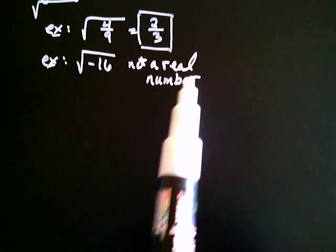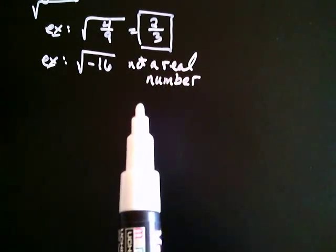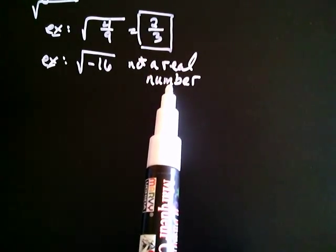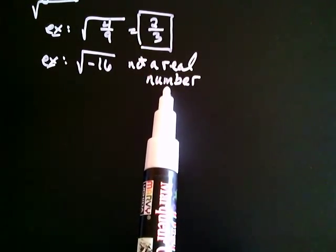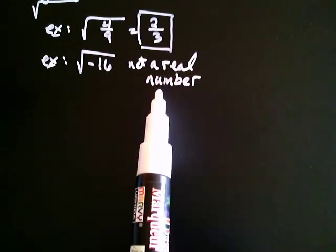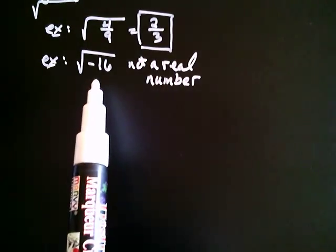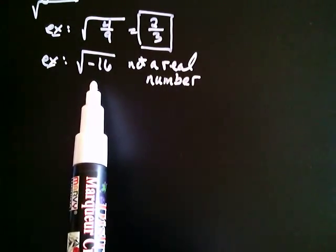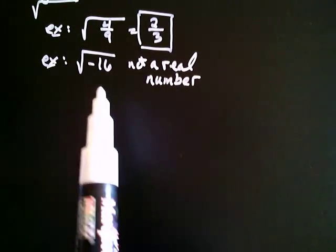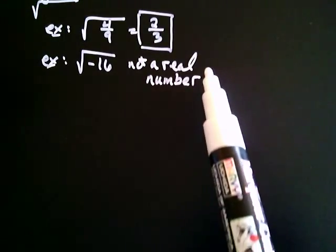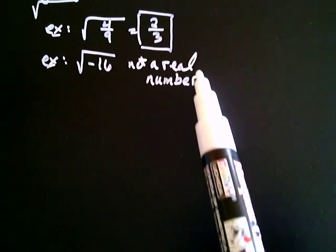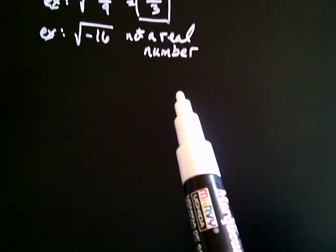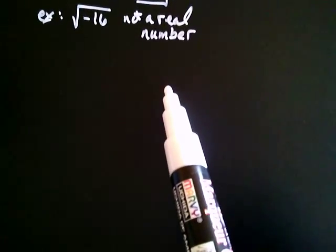Notice I've kind of left the door open here — I said 'not a real number,' not 'not a number.' It turns out we're going to meet numbers later on that have this property: when you square them, you get a negative. But right now we're just talking about real numbers, and there's no real number with that property.